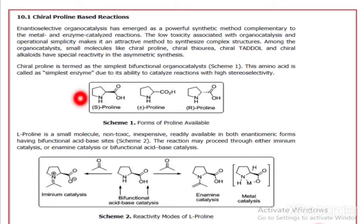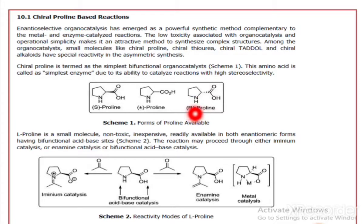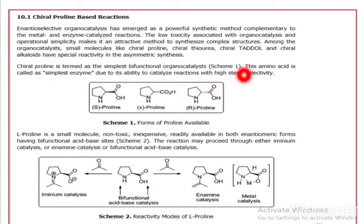Chiral proline is termed the simplest bifunctional organocatalyst. As shown in scheme number 1, different forms of proline are available — the R form and the S form. It is a bifunctional organocatalyst, meaning it has two functional groups: an acid group (the carboxylic acid) and an amine group. It exists in R form, S form, and as the racemic mixture (DL-proline, ±). This amino acid is called the simplest enzyme due to its ability to catalyze reactions with high stereoselectivity.